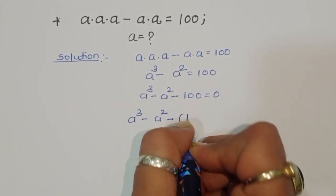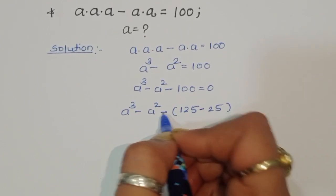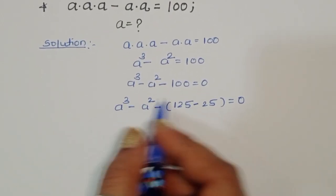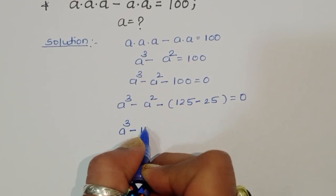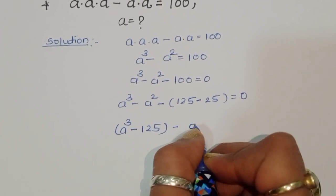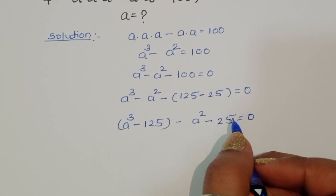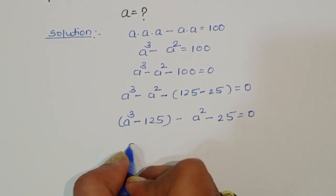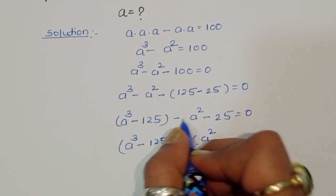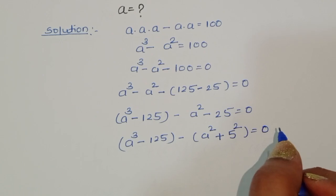We can write 100 in the form of 125 minus 25, so 125 minus 25 equals 100. Now rearranging the terms, it becomes a cube minus 125 minus a square minus 25 equals 0.